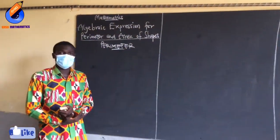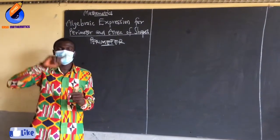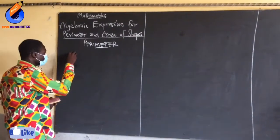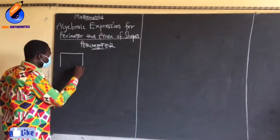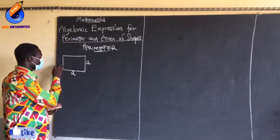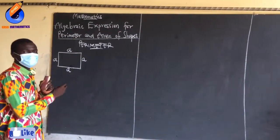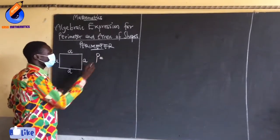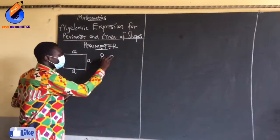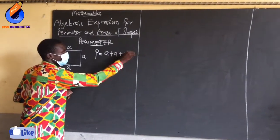When we say perimeter, what is a perimeter? A perimeter is defined as the distance around a shape. So if I have this shape, for example, let's say each side is labeled A. If I want the perimeter of this, the perimeter says to add the distance around this shape. So I am going to say A plus A plus A plus A.